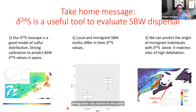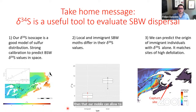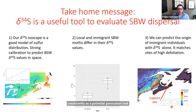As a take-home message: our δ34S isoscape is the first in Canada and is an excellent model for the distribution of δ34S in space, and can be well calibrated to insect tissues. δ34S can allow us to tease apart locals versus immigrants without any further information. And we really do seem to be able to use it consistently as a geolocation tool. We need further tests, but this is very encouraging.